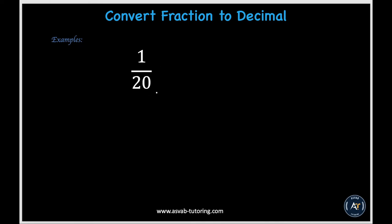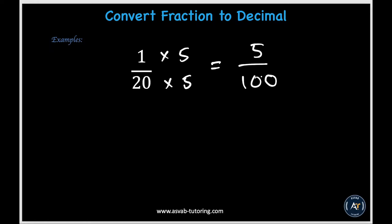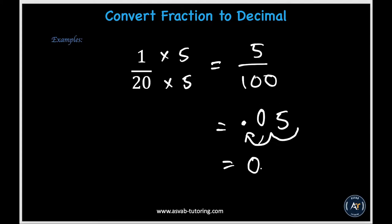In this example we have 1/20, and we'll use the same method as in the first example — turning our denominator into 100. We can do that by multiplying 20 times 5. According to equivalent fractions, we also multiply the numerator by 5. So 1 times 5 gives us 5 over 100. The number 5 has an invisible decimal point at the end. With two zeros after the 1 in the denominator, we move the decimal point two places to the left. There is an empty place, so we substitute with a 0. Our final decimal is 0.05.